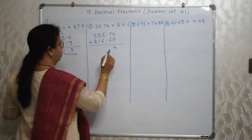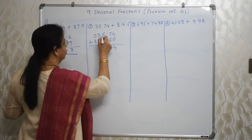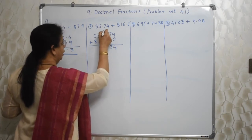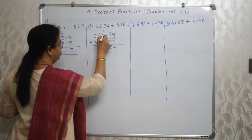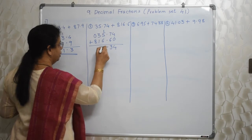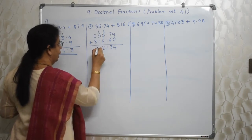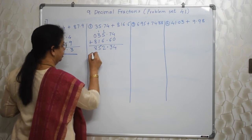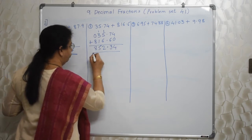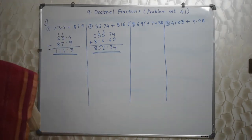Toh iske liye agar school insist karti hai ki likho toh likho. Agar nahi likhna hai, school bolti hai nahi likhna hai, toh mat likho. 4 ke niche kuch nahi hai, mat likho 4 — aise bhi ho sakta hai, doesn't matter. So 7 plus 6, 13. So 1 carry. Point ke niche point. 1 plus 5, 6. 6 plus 6, 12. So 1 carry. 5. Aur 0, 8 is 8. So 852.34 is the answer.